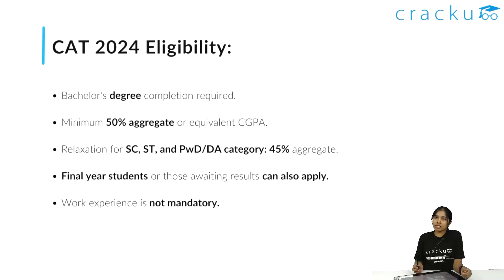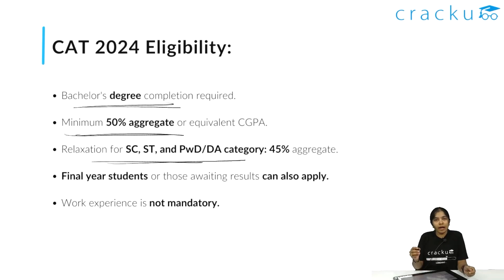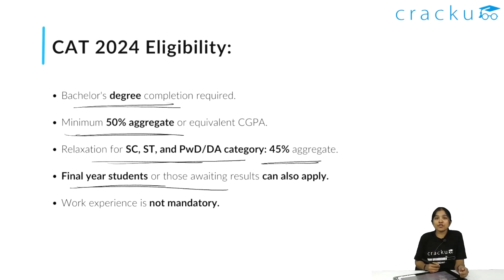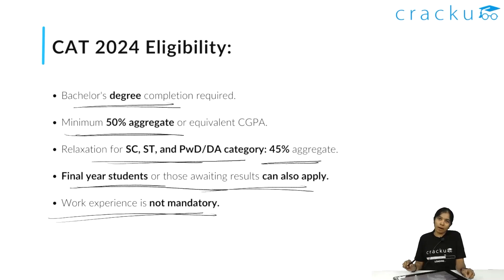Now let's talk about eligibility. To be eligible for CAT 2024, a candidate must have a bachelor's degree with a minimum of 50% aggregate or equivalent CGPA from a recognized university. For SC, ST, and PWD category students, the requirement is 45%. Candidates in the final year of graduation and those awaiting results are also eligible to apply, and work experience is not mandatory.